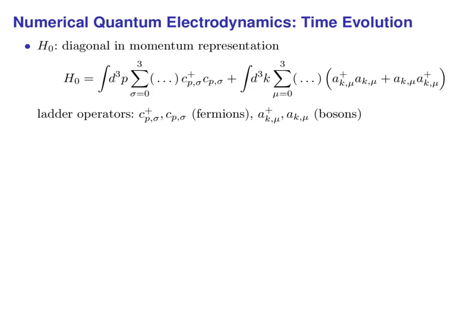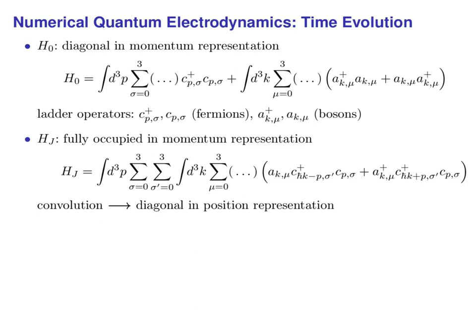The next problem is how to apply the Hamiltonian to this state. When we work in momentum representation, the free Hamiltonian is diagonal, meaning we can apply it to the wave function as a pointwise multiplication — we can even calculate the exponential pointwise. The interaction Hamiltonian in momentum representation is a fully occupied matrix, but a close look reveals that it is a convolution which we can convert to a pointwise multiplication using a pair of Fourier transforms. In other words, the interaction Hamiltonian is diagonal in position representation, and again we can calculate its exponential pointwise.